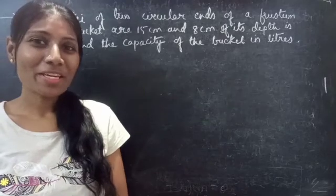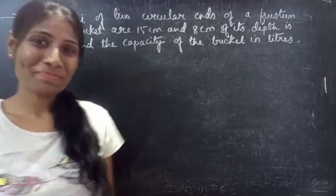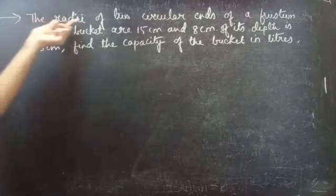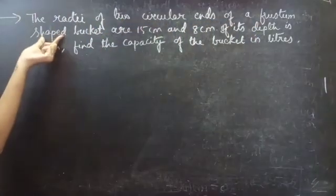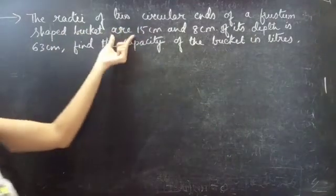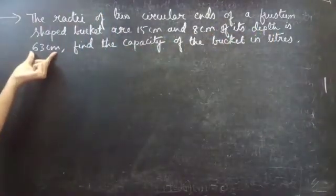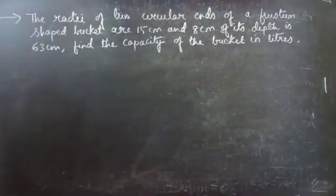Hello everyone, this is Kalpana here. In this video we are going to see a problem from frustum. The problem: the radii of two circular ends of a frustum-shaped bucket are 15 centimeter and 8 centimeter. If its depth is 63 centimeter, find the capacity of the bucket in liters.